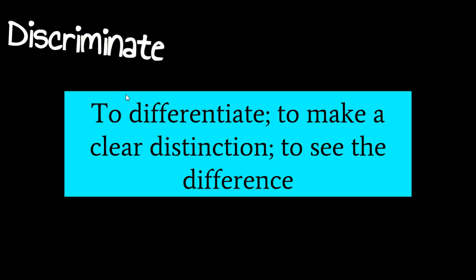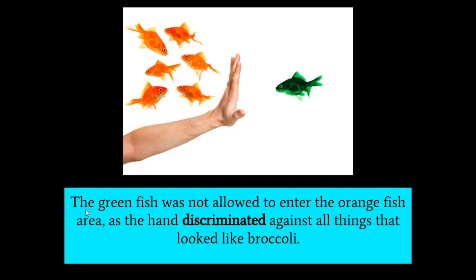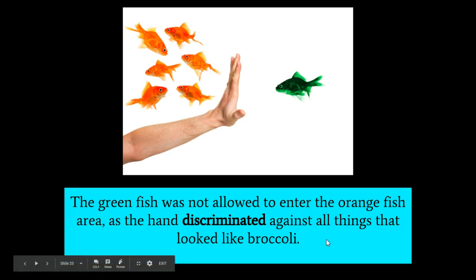Next we have discriminate — to differentiate, to make a clear distinction, to see the difference. Discriminate is a verb. In this sentence: the green fish was not allowed to enter the orange fish area, as the hand discriminated against all things that looked like broccoli. Especially in U.S. culture, and also in many cultures, discriminate has very negative connotations because it's being seen as unfair towards certain groups. So, discrimination.